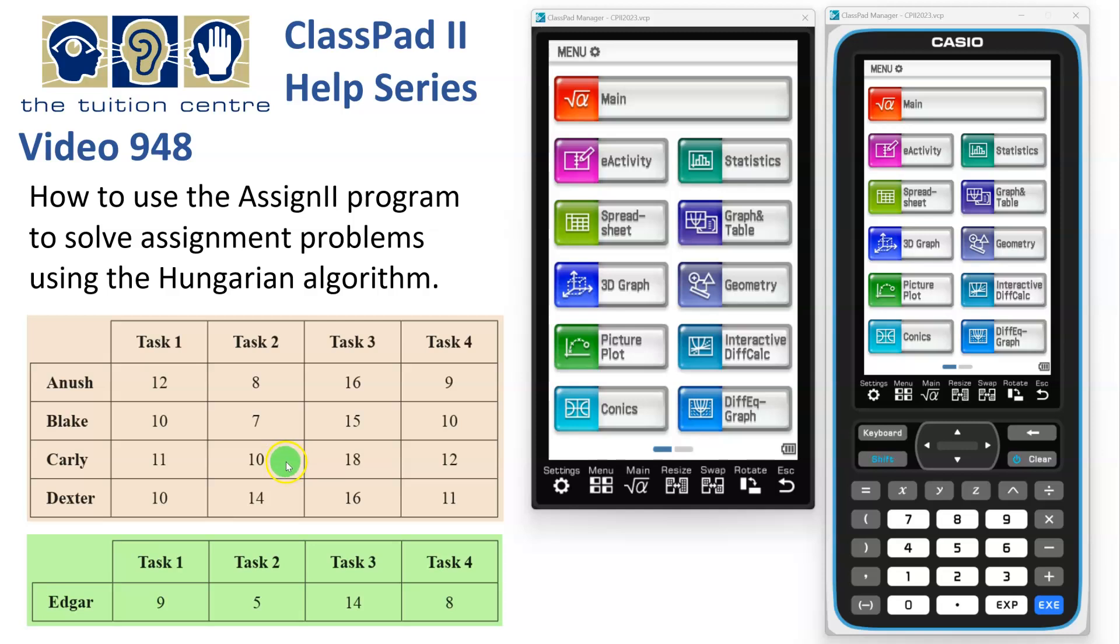And then the actual one mark was to say how much the saving was by bringing in this fifth person. So there was a lot of work to do for one mark, and if you had a program like this, it made life very straightforward. So let's have a look how it works.